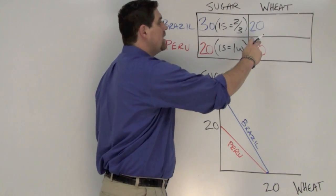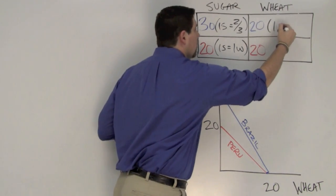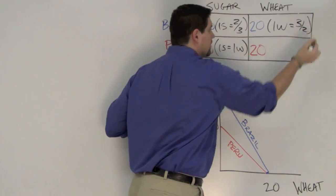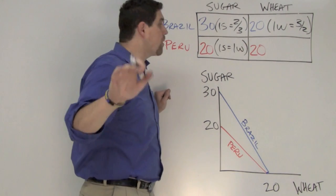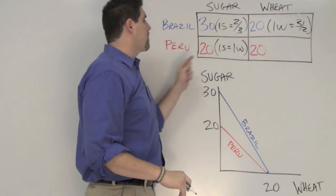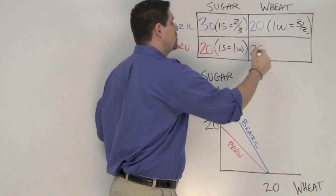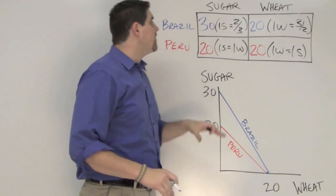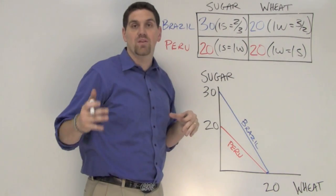Brazil produces wheat. Each wheat they produce, one wheat costs them a certain number of sugar. In this case, it's three halves of sugar they could have produced, their opportunity cost, per unit opportunity cost. For Peru, each one of these wheat they could produce, one wheat costs them one sugar.